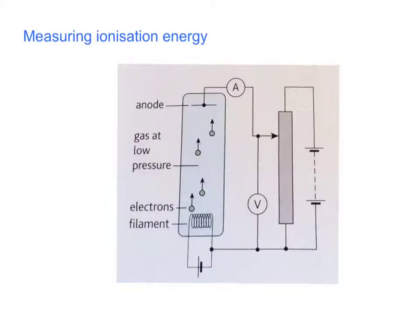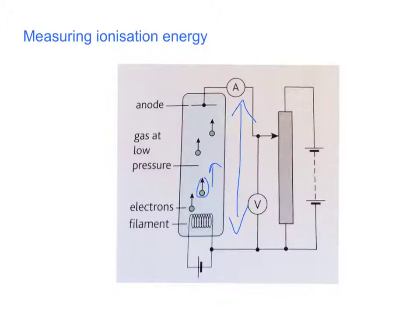We can measure the energy needed to ionise a gas atom by making electrons collide at increasing speed with the gas atoms in a sealed tube, just like this diagram here. We can adjust the potential difference across the tube. The gas itself needs to be at a sufficiently low pressure, otherwise there are too many atoms in the tube and the electrons can't reach the anode.